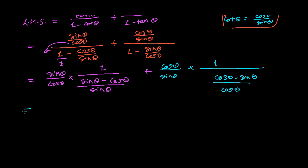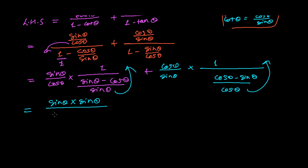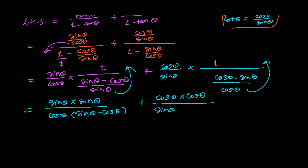So let's rearrange properly. This sine theta goes up, and similarly cos theta goes up. So it will be sine theta times sine theta divided by cos theta times (sine theta minus cos theta), plus cos theta times cos theta divided by sine theta times (cos theta minus sine theta).